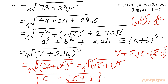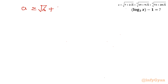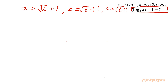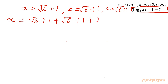Now let us evaluate the expression we need to find. We have a equals root 6 plus 1, b equals root 6 plus 1, and c equals root 6 plus 1. So x equals (root 6 plus 1) plus (root 6 plus 1) plus (root 6 plus 1), which equals 3 times (root 6 plus 1). This is our simplified x.